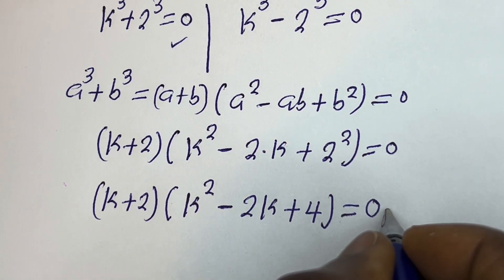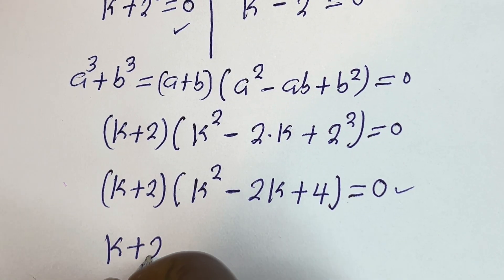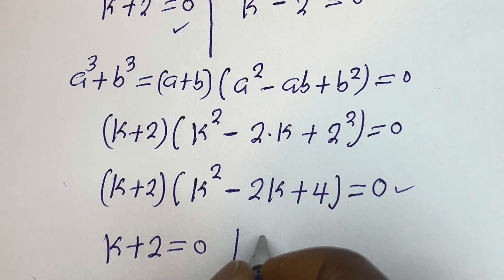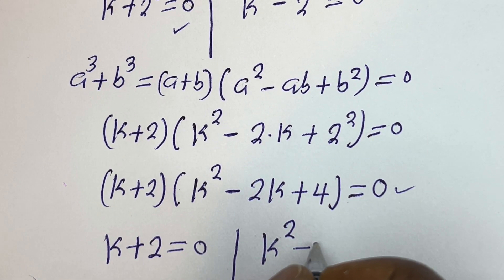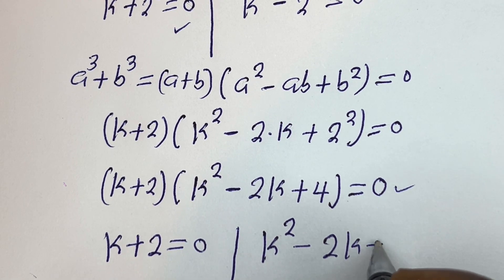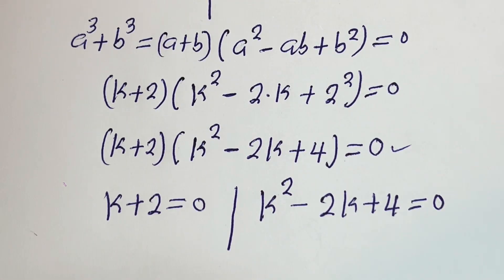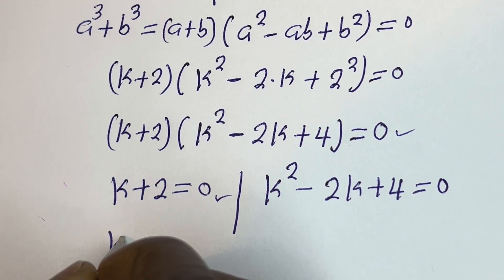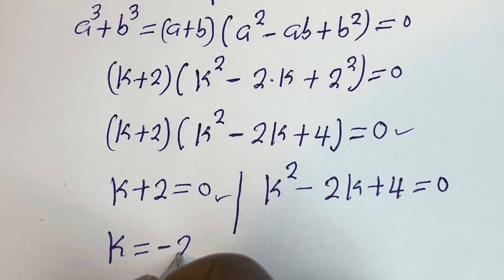There are two sub-cases here: k plus 2 equals 0, or k squared minus 2k plus 4 equals 0. From the first sub-case, k is equal to minus 2.